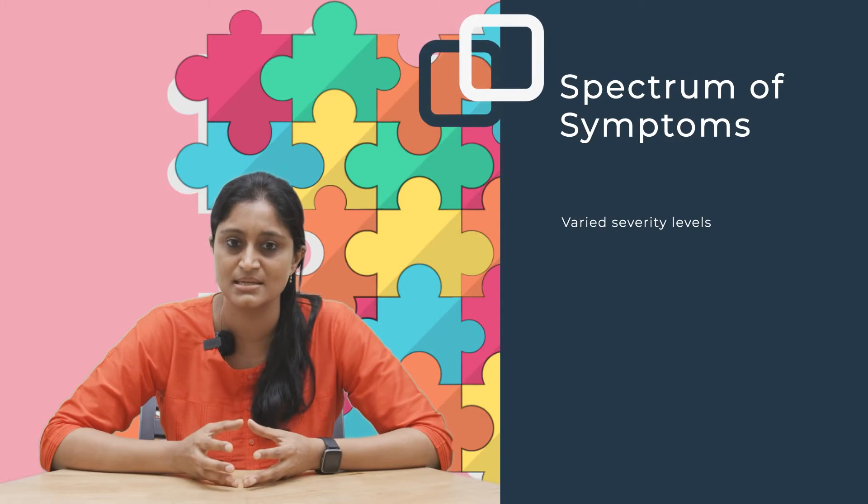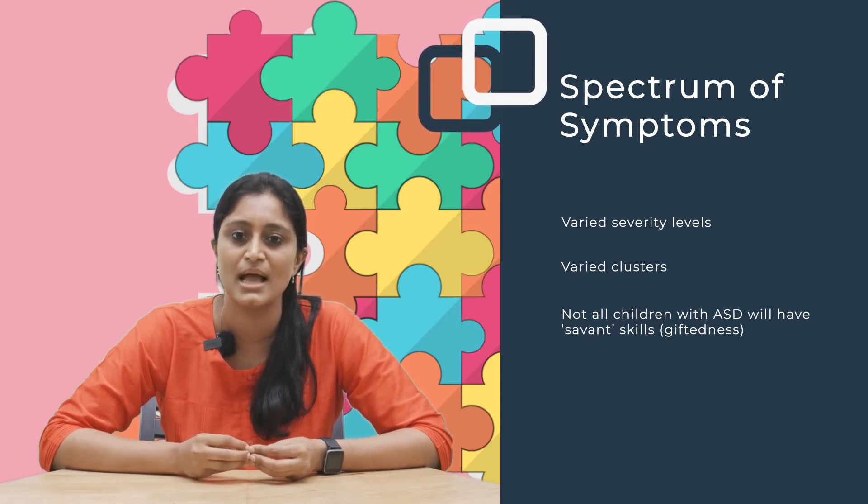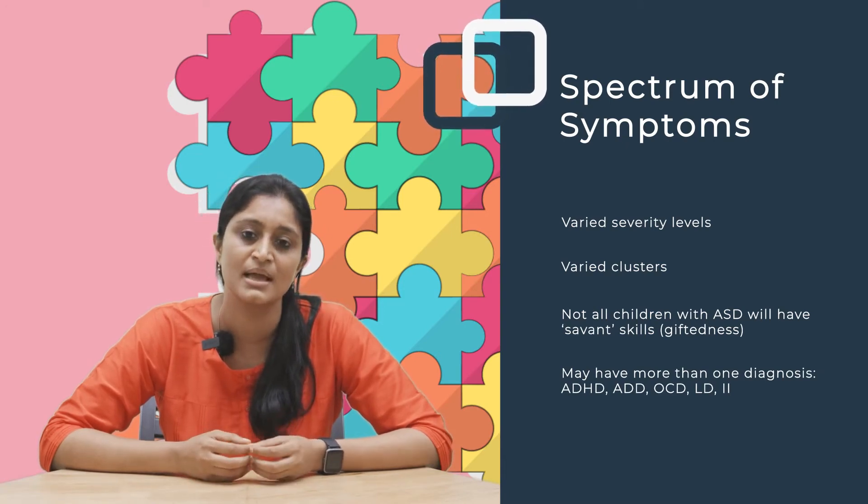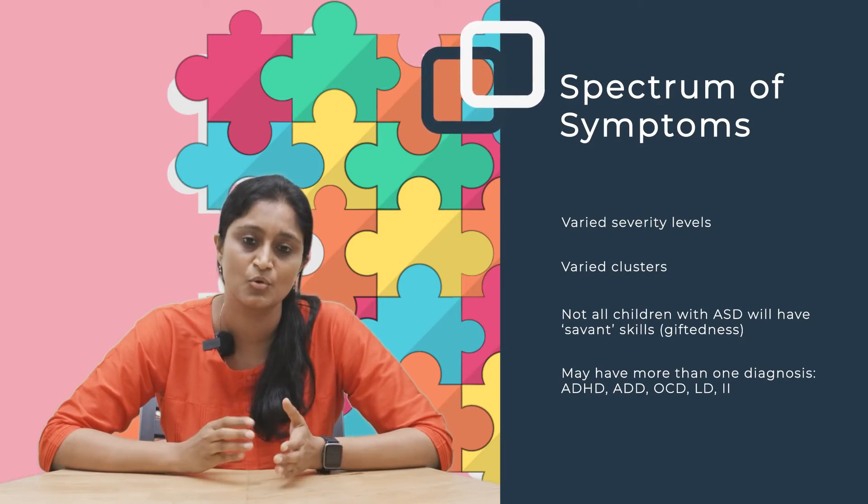Your child will have a spectrum of symptoms with varied severities — each child is unique in their strengths and challenges. Some may have no behavioral concerns but have communication or language issues; others may have sensory issues impacting language or behavior. Comparison between children with ASD is simply not possible. Also, it is a misnomer that children with ASD have savant skills — very few have giftedness in math or memory, and more often there may be hyperactivity or learning difficulties leading to a comorbid diagnosis.